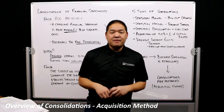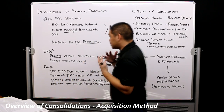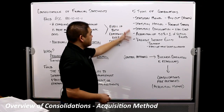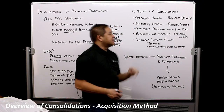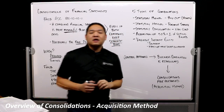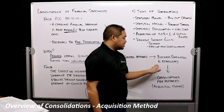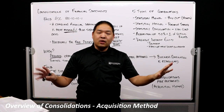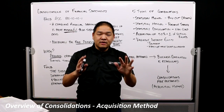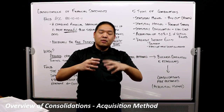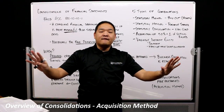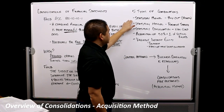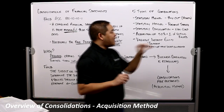Let's give an overview of five types of combinations you're going to see. First, let's talk about what "statutory" means. Statutory means that when a business combination occurs, one of the organizations is going to dissolve — one or more of the organizations involved will dissolve. The first type is the statutory merger with a buyout of assets.